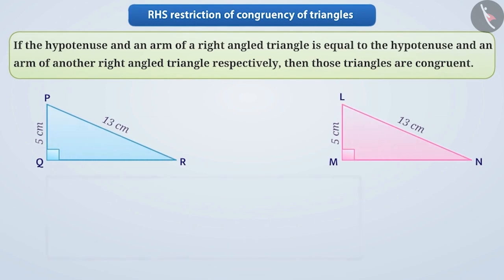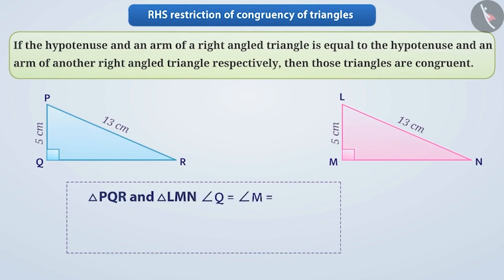For example, here are two right angled triangles, triangle PQR and triangle LMN, with angle Q equals angle M equals 90 degrees. The side PQ equals LM equals 5 cm, and the hypotenuse PR equals LN equals 13 cm.